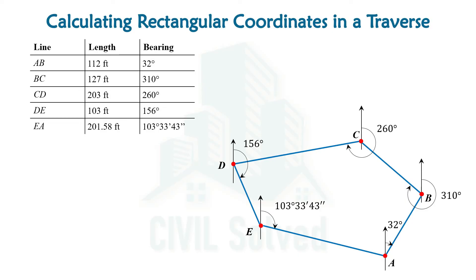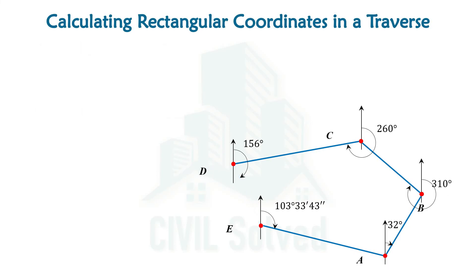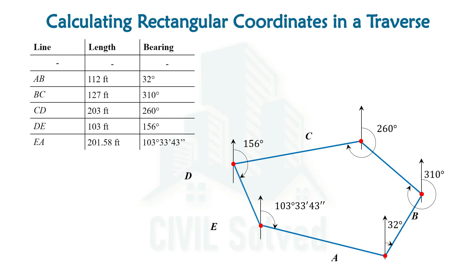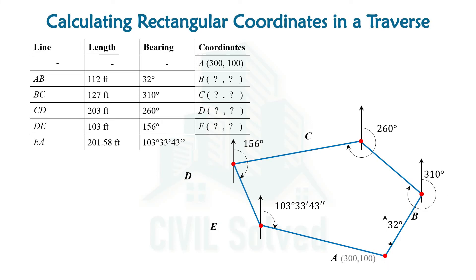But in an open traverse, the starting point and ending point are not the same. If we have been given the coordinates of point A, then the coordinates of the respective points B, C, D, and E are required to be calculated.